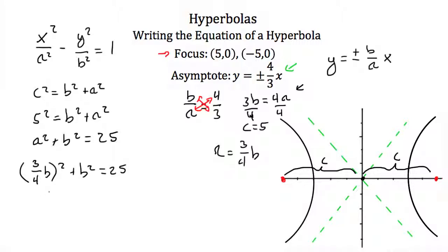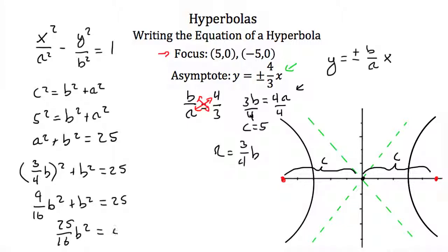That means 9/16 b squared plus b squared equals 25. Adding like terms, we get 25/16 b squared equals 25.